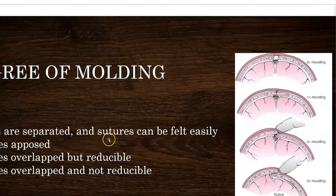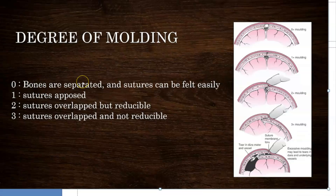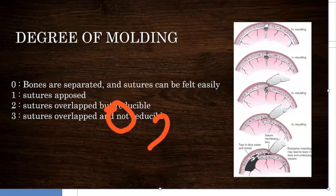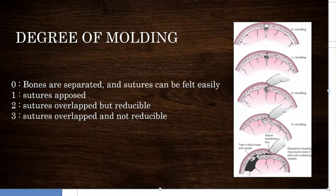So the degrees of molding: Zero - bones are separated and sutures can be felt easily; bones are not even touching. One - sutures are touching each other. Two - sutures are overlapped but reducible; you can reduce them. Three - sutures are overlapped and not reducible. 'Not reducible' is the key feature of grade three molding.